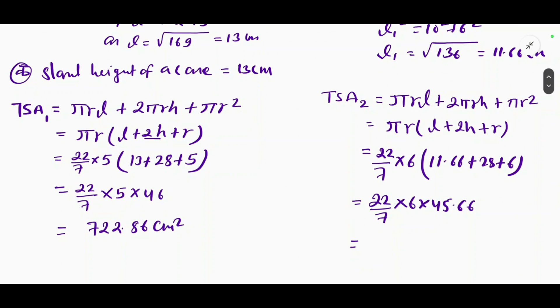Multiplying and dividing gives us 861.02 cm squared.